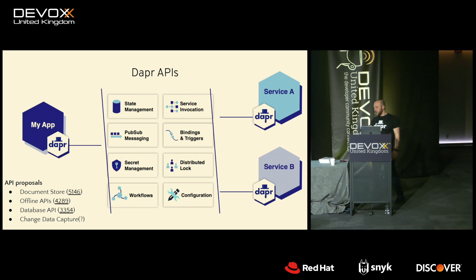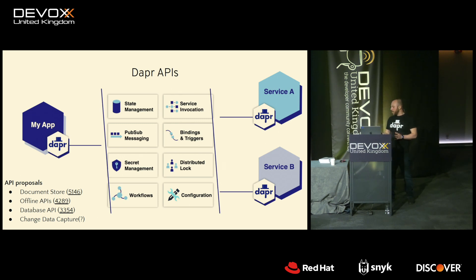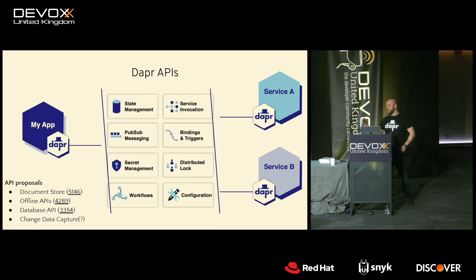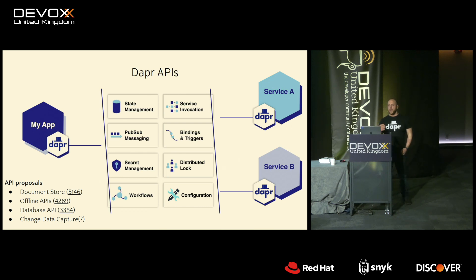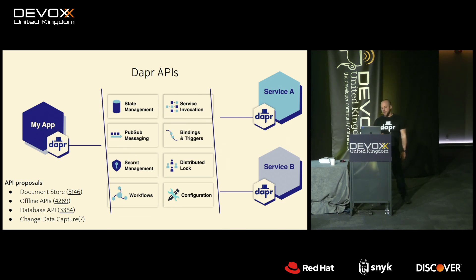The list goes on: there's a state management API — a key-value access API to different data stores — a configuration API for accessing different configuration endpoints, a secrets API for accessing different secret providers such as HashiCorp Vault or cloud-based secret stores. There are also API proposals for a document store, offline processing, database APIs, and more. These APIs let you isolate your applications from each other and from external dependencies.